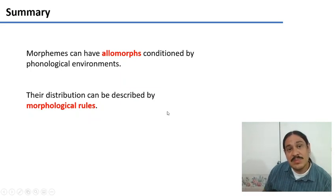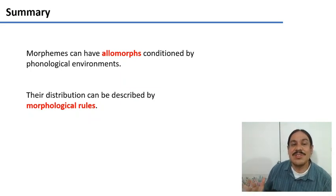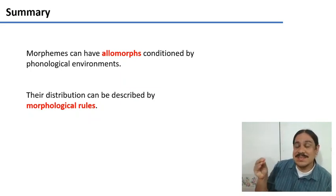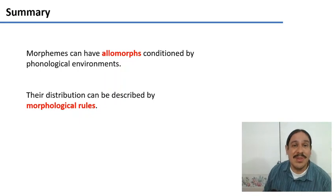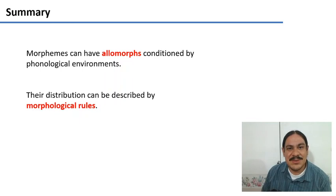In summary, morphemes can have allomorphs, which are conditioned by phonological environments, like being next to a voiced or voiceless sound. And we can describe the distribution with morphological rules that look a lot like our phonological rules from last week. In the next video, we're going to study the Turkish plurals and their distribution.